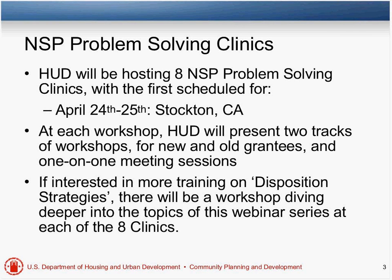There are going to be eight NSP problem-solving clinics coming up in the spring and summer for grantees and your partners. The first one is April 24th and 25th, just two weeks away in Stockton, California. Grantees in this area can register online — up to 10 grantee staff and partners. Each clinic will have two tracks of workshop, one for new and experienced grantees, plus one-on-one expert consultation sessions and one-on-one technical assistance. One of the workshops will be on disposition strategies.